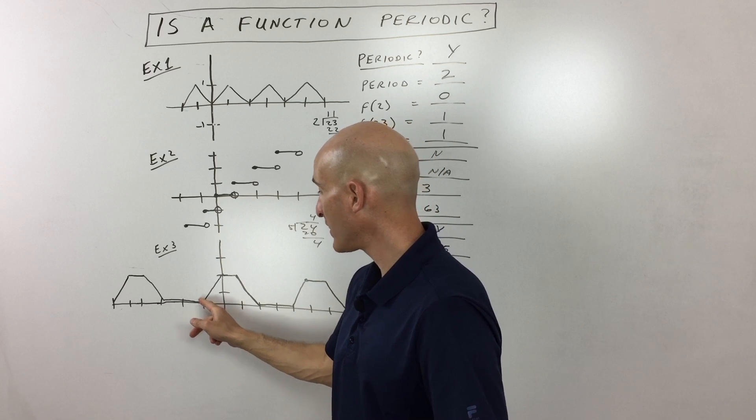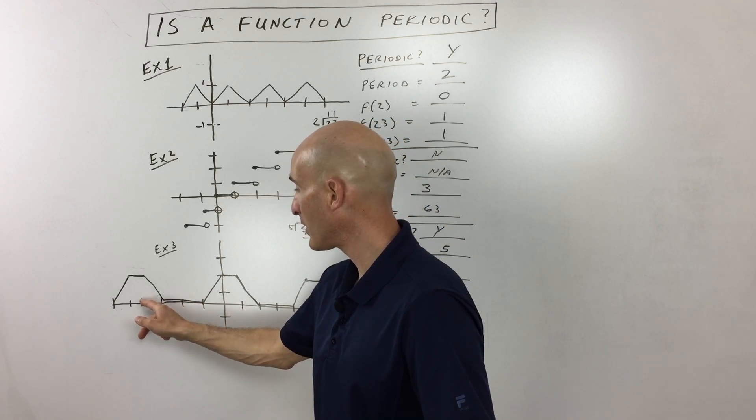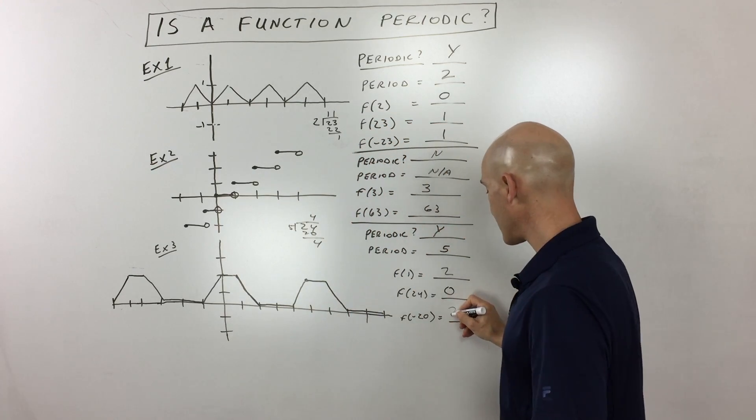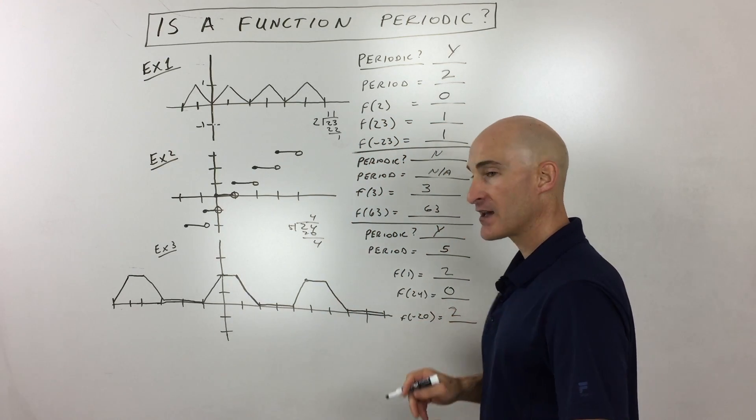then remainder four. So let's look at that remainder four. One, two, three, four. You can see we're going to be right there at y equals two. So that's the result, f of negative 20.